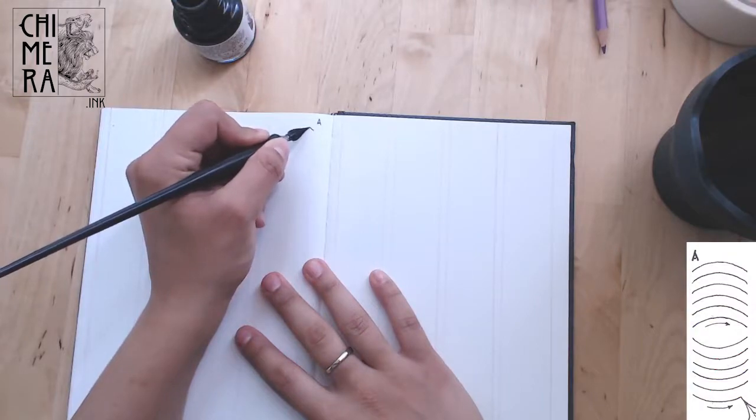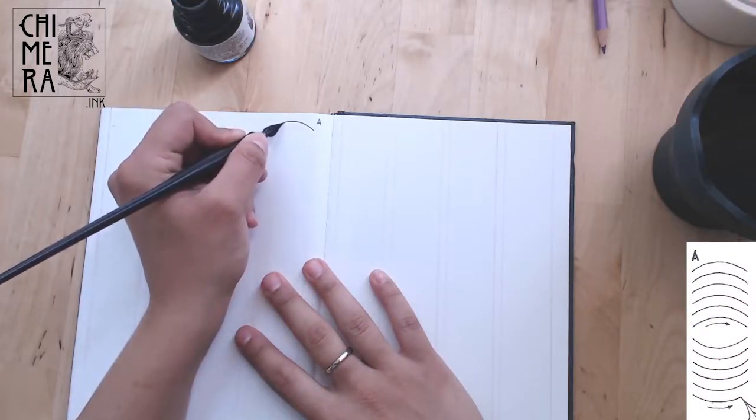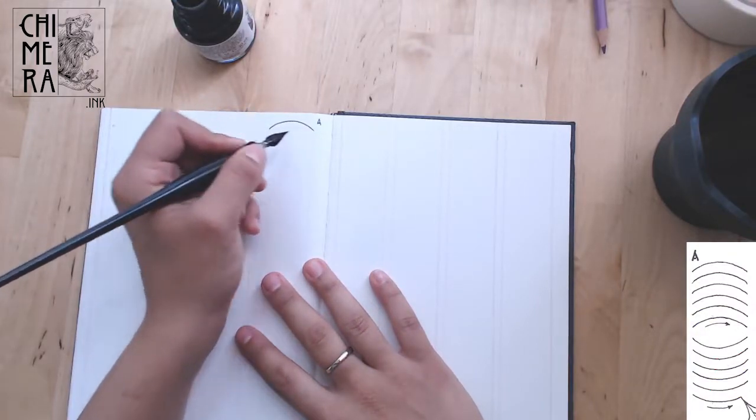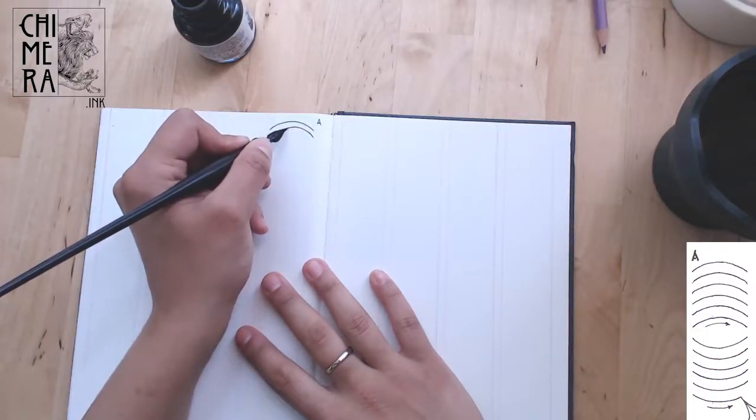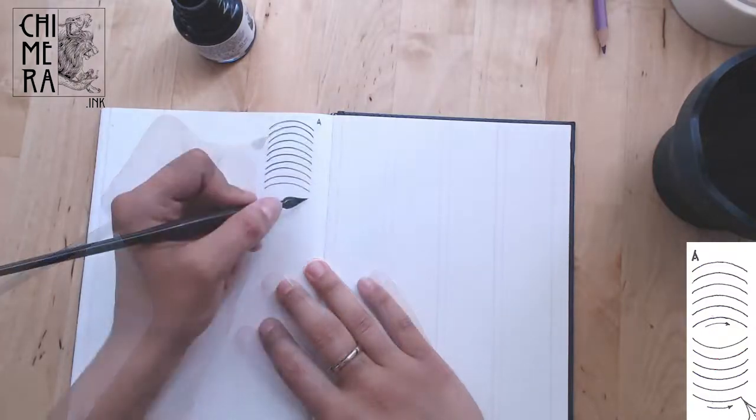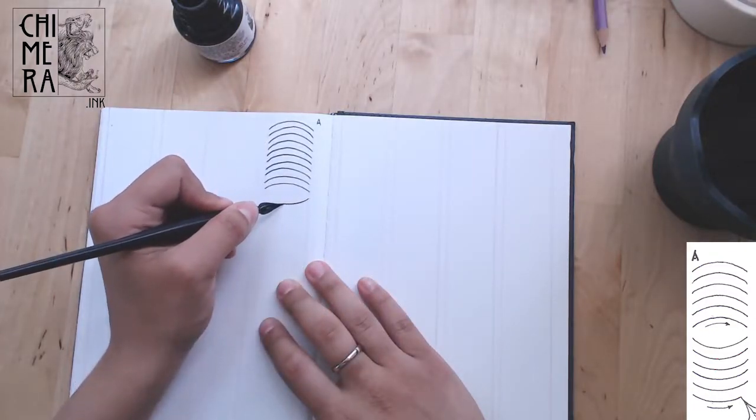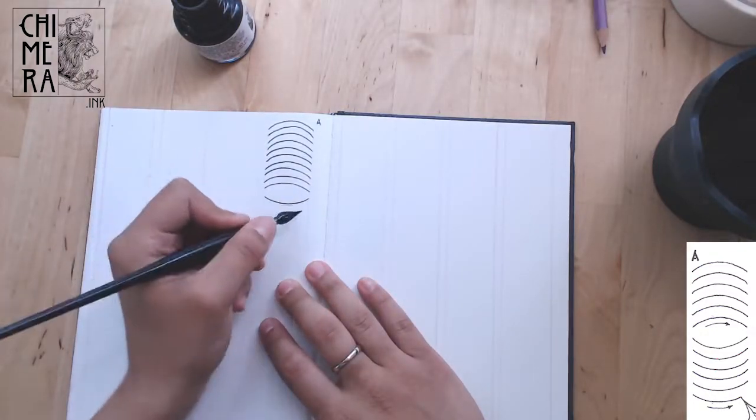In exercise A, draw arches as evenly spaced as you can. This can be a bit tricky, especially on the edges, since it's really easy to end up joining the ends of the next lines. These arches should be drawn first upwards, then downwards.